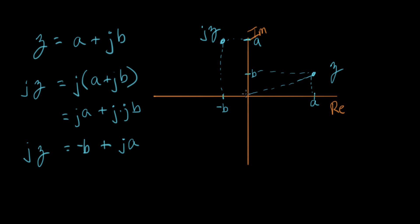And let me draw the hypotenuse of that. This is the vector representing jz right there. So now we have a bunch of triangles on the page. And what I want to demonstrate is that this angle right here is 90 degrees.